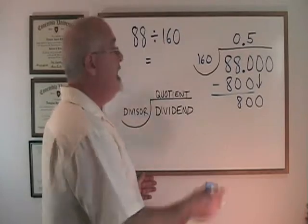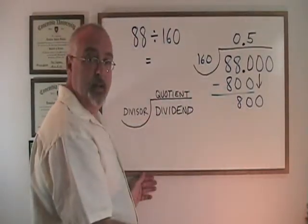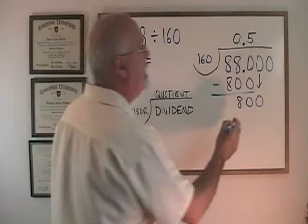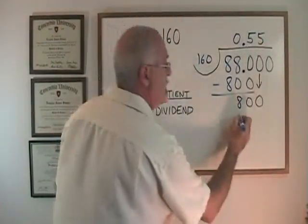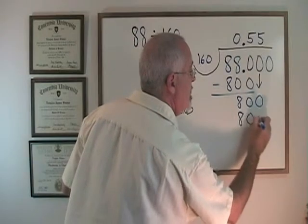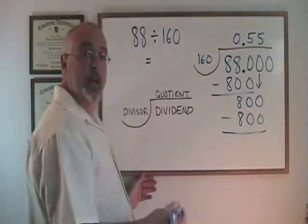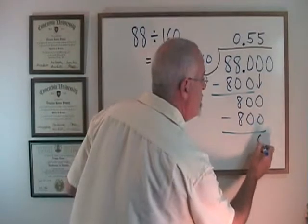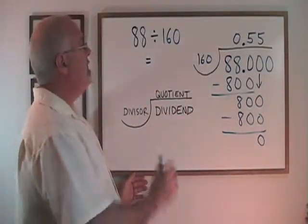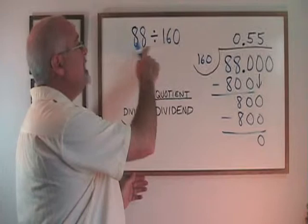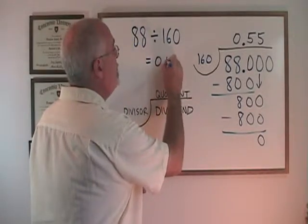And then I ask myself: does 160 fit into 800? Yes. It fits into 800 five times. I write the 5 here. 5 times 160 is 800. And I subtract again. 800 minus 800 is 0, which tells me that I am finished. And that means that the answer to the division 88 divided by 160 is 0.55.